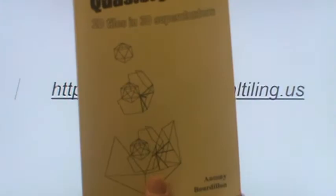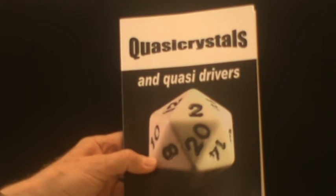Quasicrystals, 2D tiles in 3D superclusters. And quasicrystals and quasidrivers. The driving force is the dense icosahedral subclusters. Now when you discover logarithmic periodicity in one part of physics, you expect also to find it in other parts of physics.